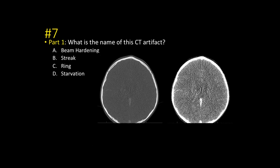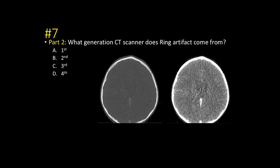Number seven, part one: what is the name of this CT artifact? Ring artifact — it's a bunch of concentric rings. Part two: what generation CT scanner does ring artifact come from? It's a third-generation scanner. To correct this, you have to call in your vendor technician to replace the detector.